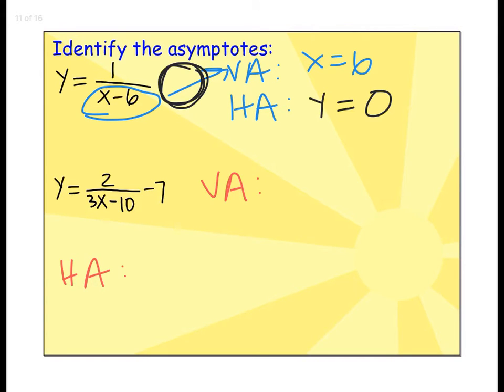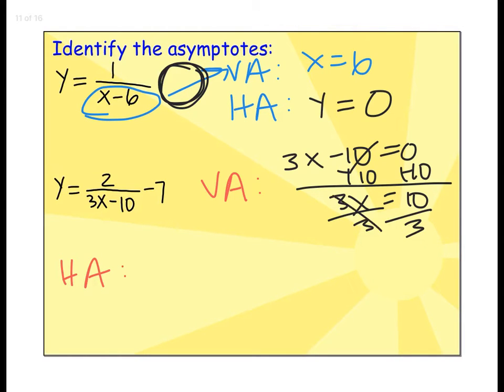Another example: y equals 2 divided by 3x minus 10, then minus 7. The vertical asymptote is trickier because I have 3x minus 10 in the bottom, so I'll set that equal to 0. Add 10, then divide by 3. My vertical asymptote is x equals 10 thirds or 3.33. Horizontal asymptote is y equals negative 7. There are always two asymptotes when we're graphing.